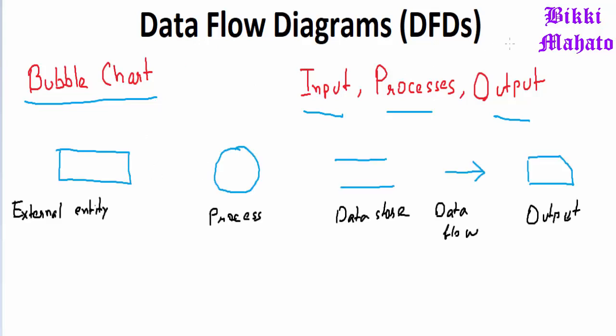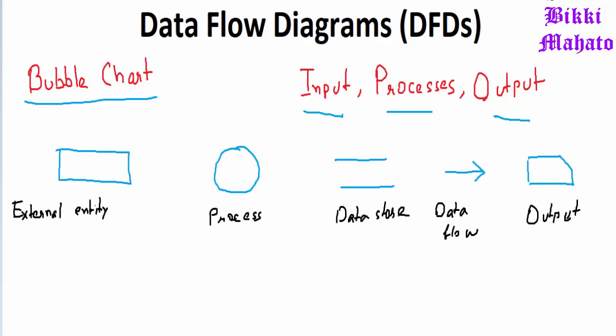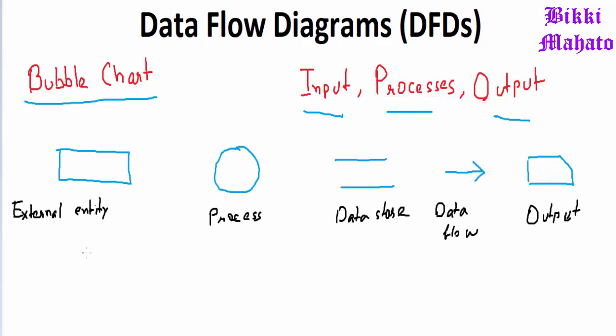So there are some symbols that are used for constructing DFD. So basically we have external entity, process, data store, data flow and output.